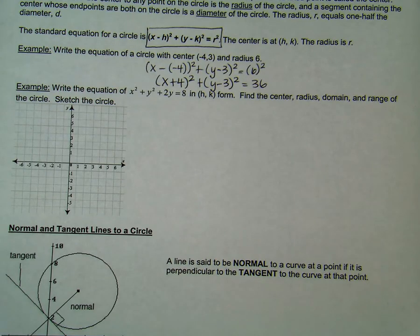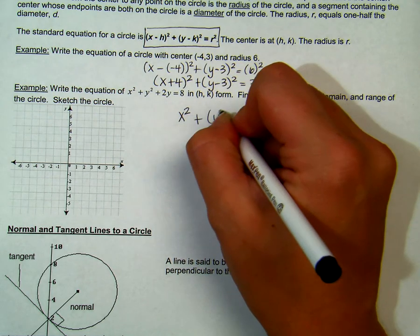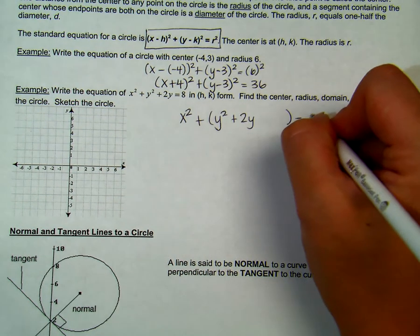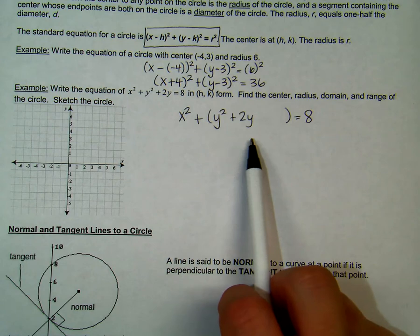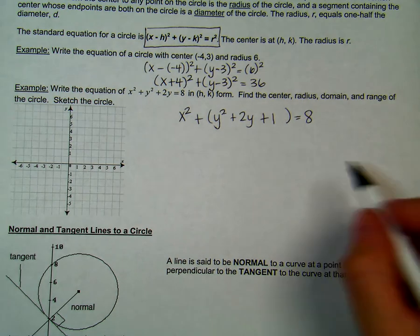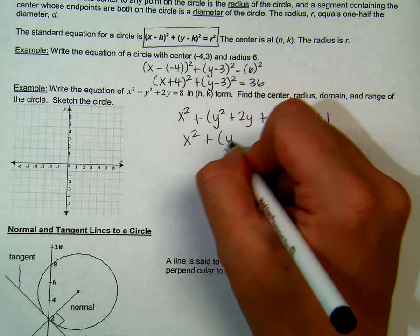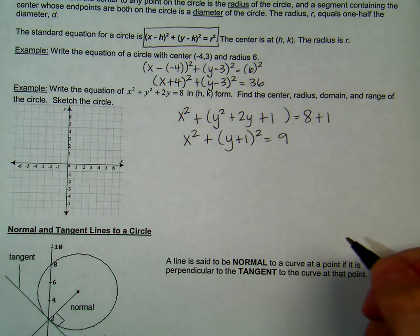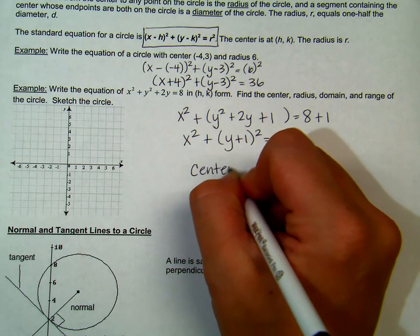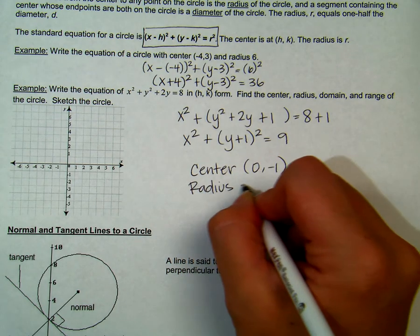The next example says: write the equation x squared plus y squared plus 2y equals 8 in (h, k) form, and find the center, radius, domain, and range of the circle. We must first put this in standard form by completing the square. We rewrite it as x squared plus y squared plus 2y with a space equals 8. Since 2 divided by 2 is 1 and 1 squared is 1, we add 1 to both sides. We are left with x squared plus y plus 1 squared equals 9. This tells us our center is (0, negative 1) and our radius is 3.